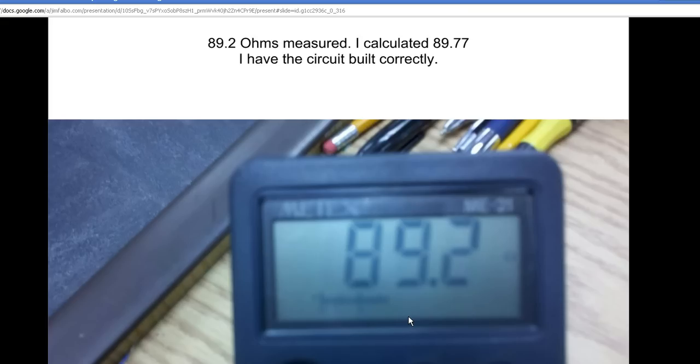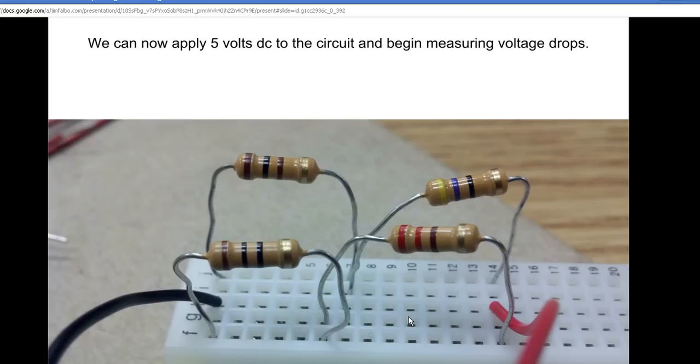My ohmmeter read 89.2 ohms and I calculated 89.77—close enough. I can now apply power, my positive and negative from my five volts to my circuit. After this is completed, we'll start taking voltage drop measurements.